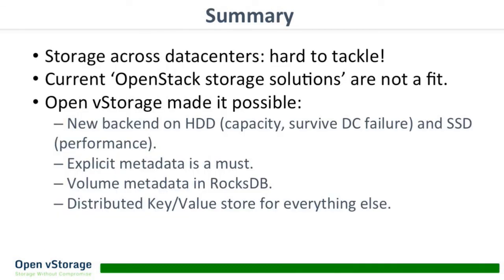In summary: storage across data centers is really hard to tackle and current OpenStack solutions are not a fit, so we had to build it ourselves. We created new backends — open source — on HDDs for capacity and on all-flash arrays for performance. We use explicit metadata so we can survive data center failures and do suboptimal writes, we keep volume metadata in RocksDB, and use a key-value store for everything else. That's in a nutshell what we had to tackle to survive data centers and spread data across data centers.